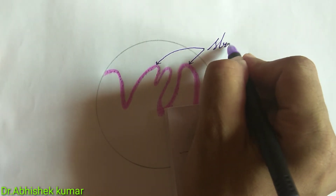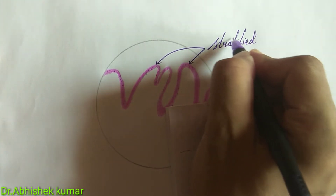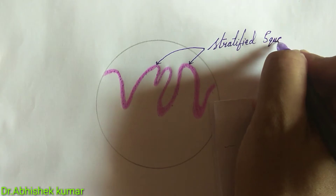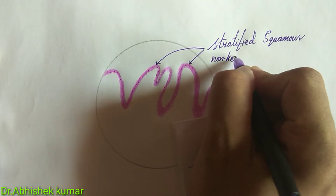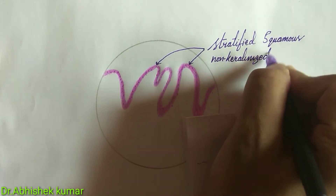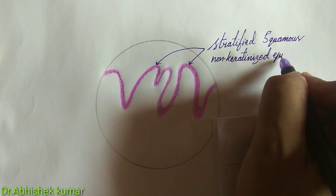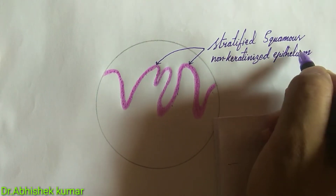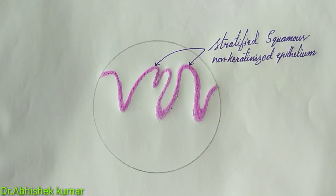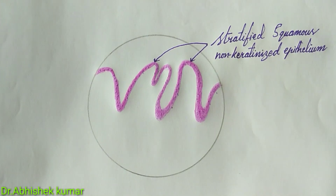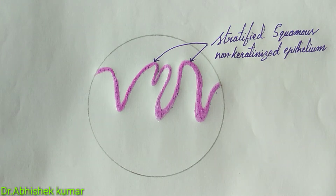The surface of the palatine tonsils is covered by a protective layer of stratified squamous non-keratinized epithelium. The palatine tonsils are not surrounded by a connective tissue capsule on their surface.